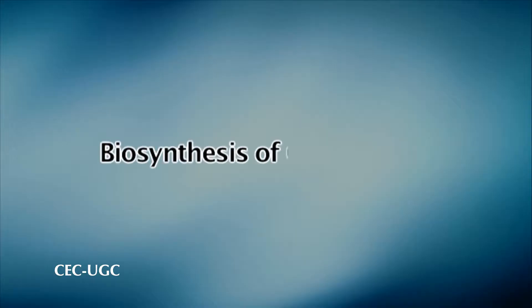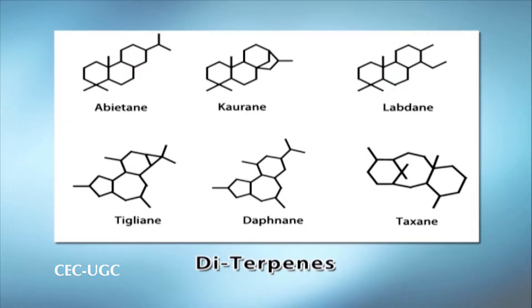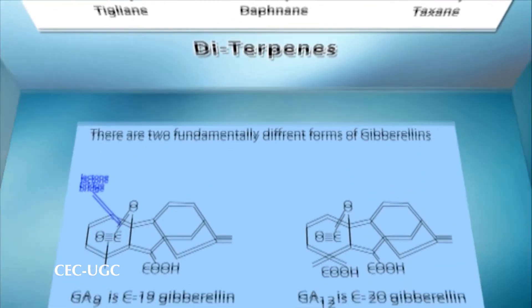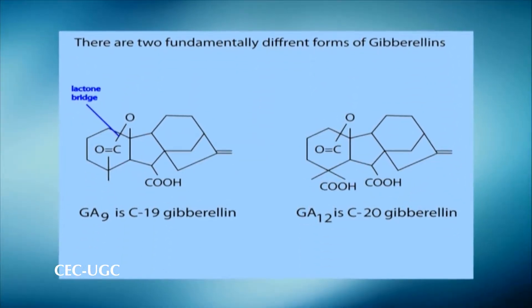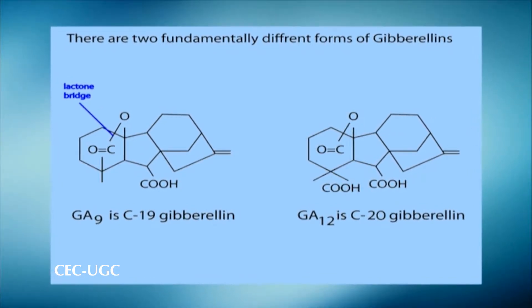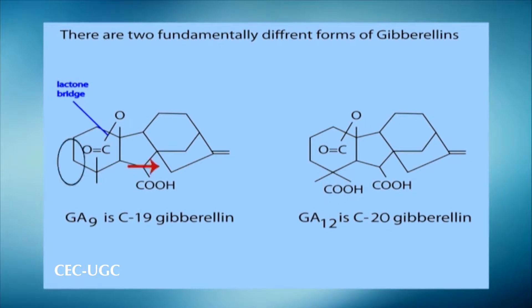Gibberellins are diterpenes synthesized from acetyl-coenzyme A via the mevalonic acid pathway. They all have either 19 or 20 carbon units grouped into either 4 or 5 ring systems. The fifth ring is a lactone ring attached to ring A, as shown in the structure above. Gibberellins are believed to be synthesized in young tissues of the shoot and in developing seeds, though it is uncertain whether young root tissues also produce gibberellins. There is also some evidence that leaves may be a source of some biosynthesis.